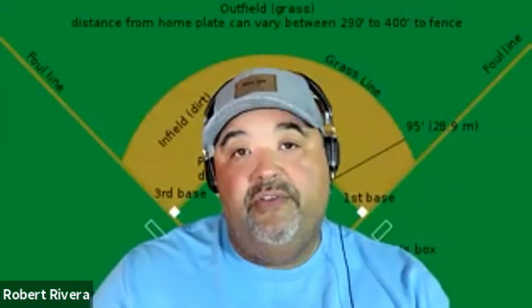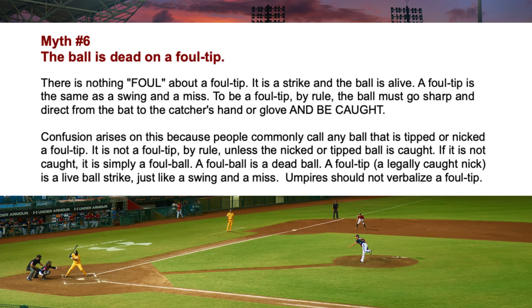With two outs, even if first base is occupied, the batter can run toward first base. There is nothing foul about a foul tip — it is a strike and the ball is live. A foul tip is the same thing as a swing and miss. To be a foul tip by rule, the ball must go sharply and directly from the bat to the catcher's hand or glove and be caught.